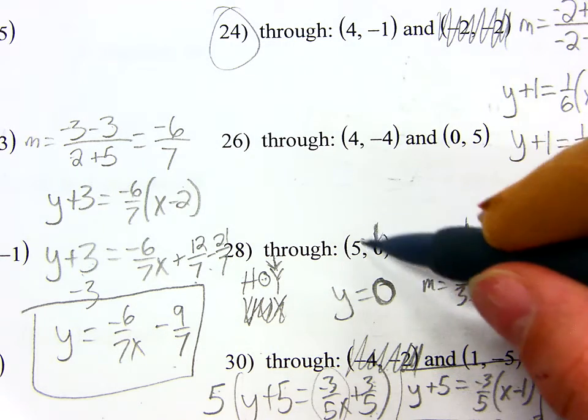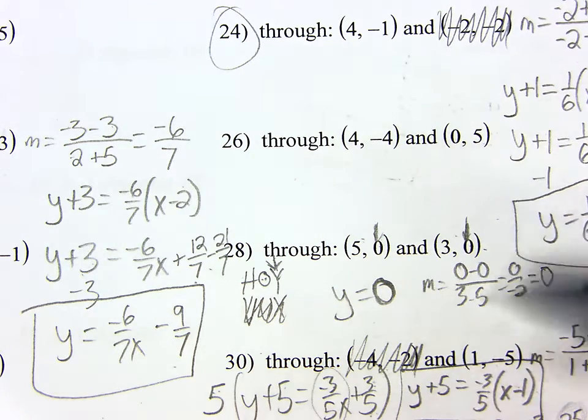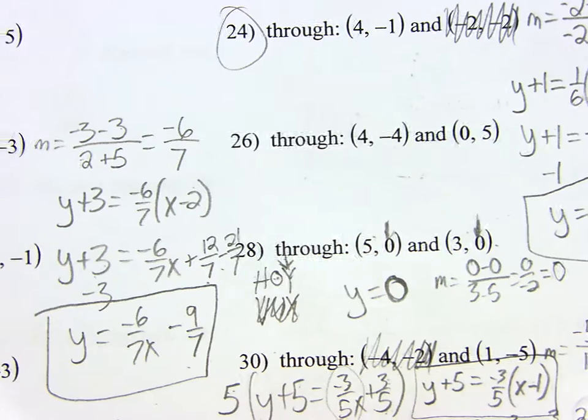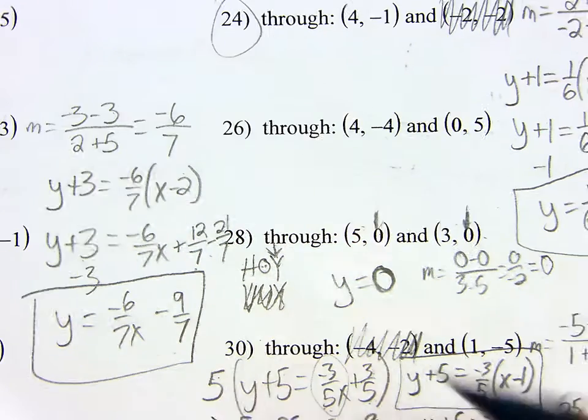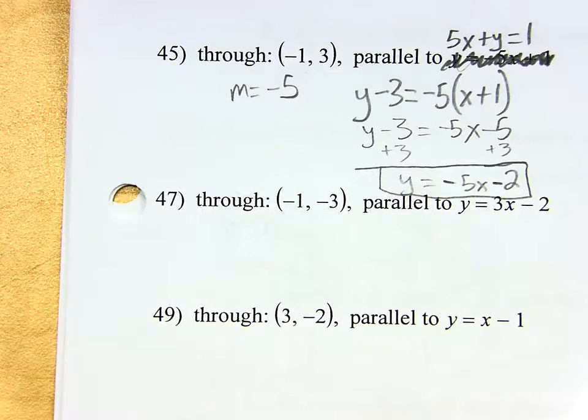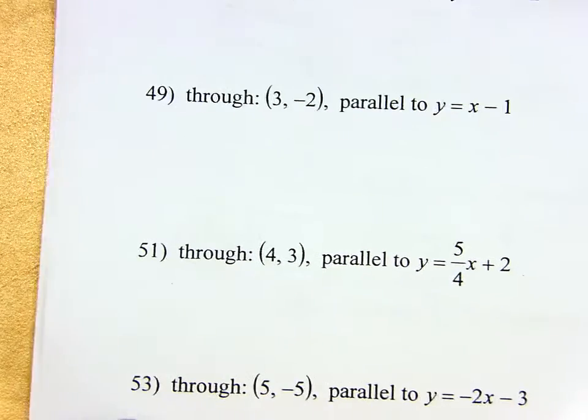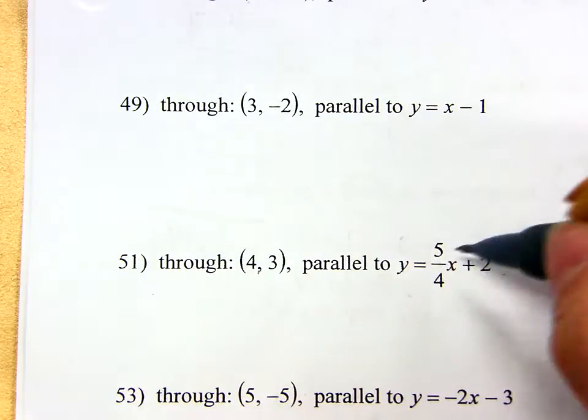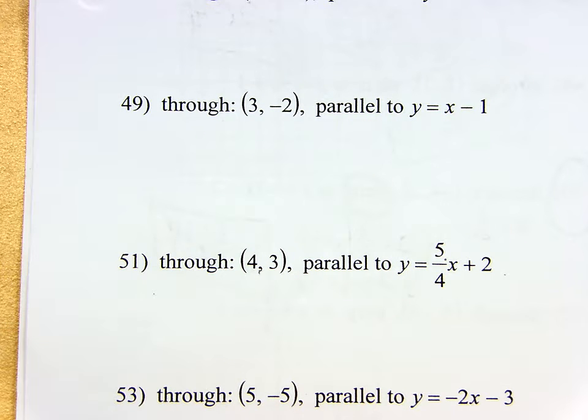But if you take a second and just check, do I have the same exact Xs or the same exact Ys? It'll save you a bunch of time. Okay, so your final answer to this was just Y equals zero. 51.